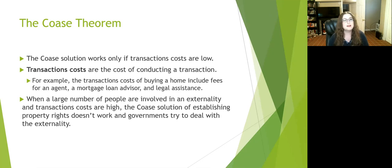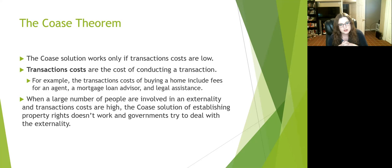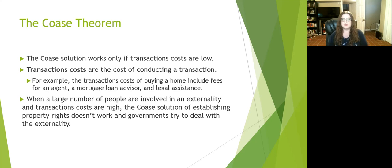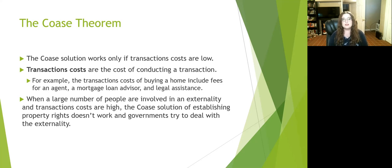One way to correct for externalities is by defining property rights. If you know who owns the river, it's a lot easier to negotiate and come to an agreement about pollution. If the company owns the river, the people in those houses could pay them not to pollute. If the people own the river, the company can pay them a fee or be told no.